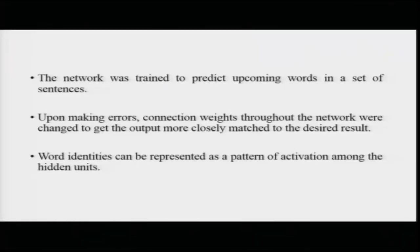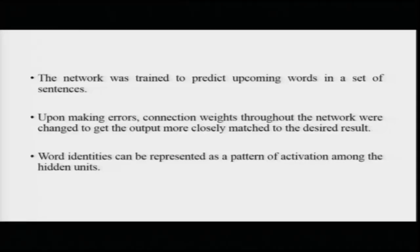This network can be trained to predict upcoming words in sentences based on earlier words. Upon making errors in predictions, connection weights throughout the network are changed to get the output closer to the desired output. There are parameters with certain weights - weights represent contribution to the judgment and can be adjusted. In successive cycles the output gets closer to the desired output. When the model makes errors, connection weights are changed to help the network learn better and reach the correct output.